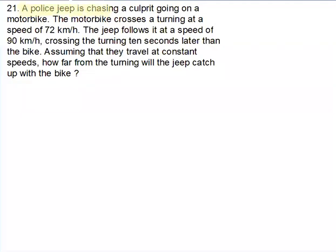A police jeep is chasing a culprit going on a motorbike. The motorbike crosses a turning at a speed of 72 km per hour. The jeep follows it at a speed of 90 km per hour, crossing the turning 10 seconds later than the bike. Assuming that they travel at constant speed, how far from the turning will the jeep catch up with the bike?